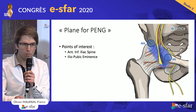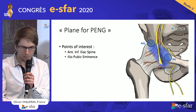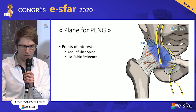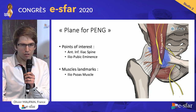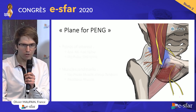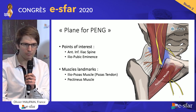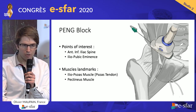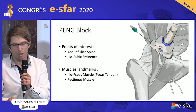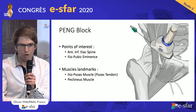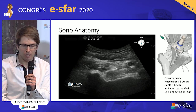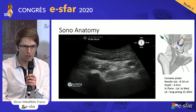And this is what the PENG block does. As I said before, it is a plane block, so you need an anterior barrier — and we have it with the iliopsoas muscle and with the pectineus muscle. Now we have to put our probe in the right place and insert the needle without damaging other structures. When you put your probe at the right place, you will have this image.